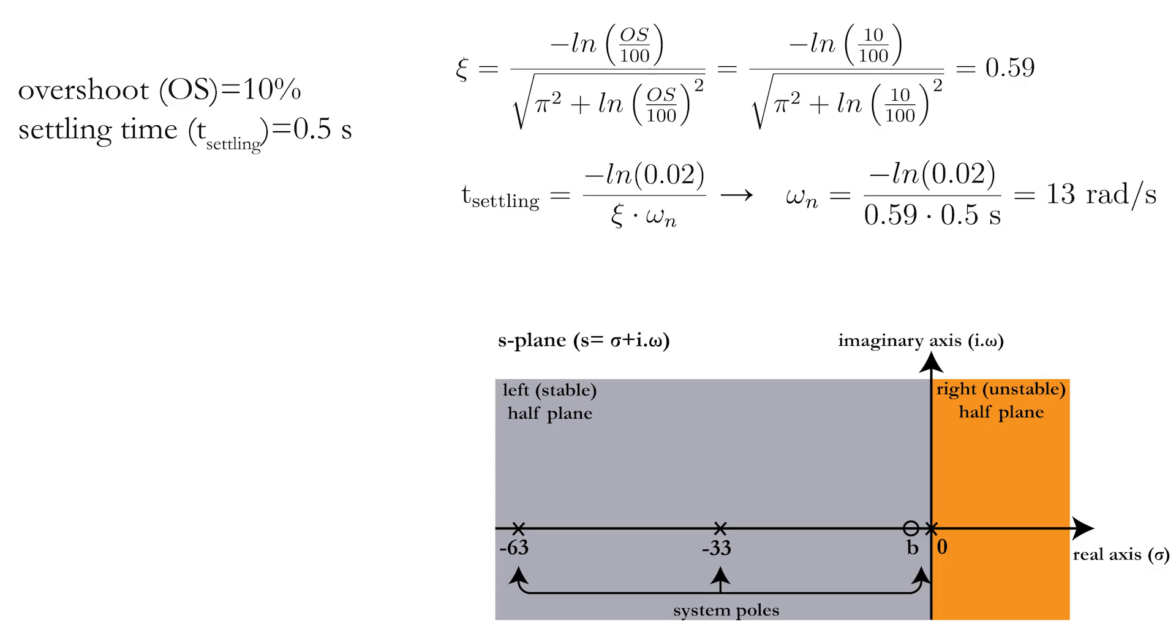With the help of the damping ratio and the natural frequency, you can calculate the desired poles of the full system. Let's write only the relevant, desirable pole on the figure, because this pole is elemental for the root locus method.